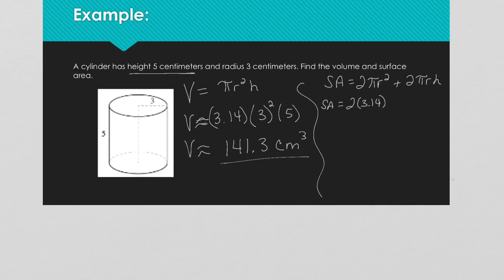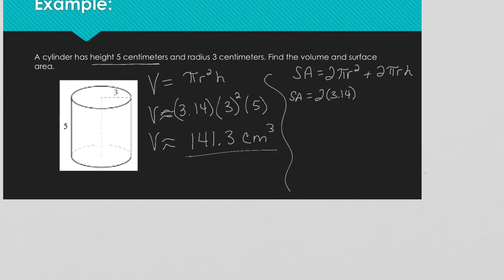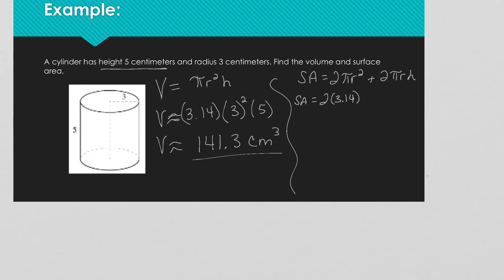And then our surface area is 2 times 3.14 times r² — which is 3 squared — plus 2 times 3.14 times r — which is 3 — times our height, which is 5.